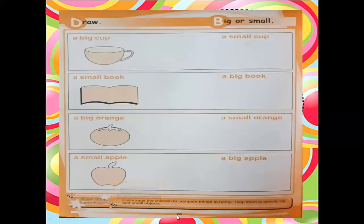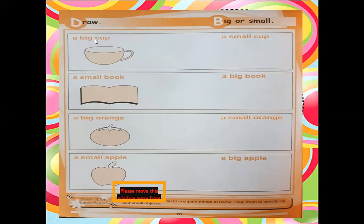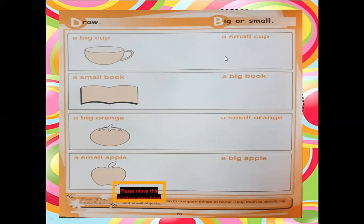Now this is page number 78 in your Gaba Math book. They say draw big or small. We are doing another exercise on big and small. A big cup is already shown - what they say is draw a small cup. You will draw a cup that is smaller than this one. Look here - this cup is now smaller than this one.